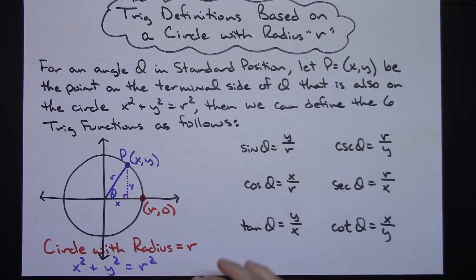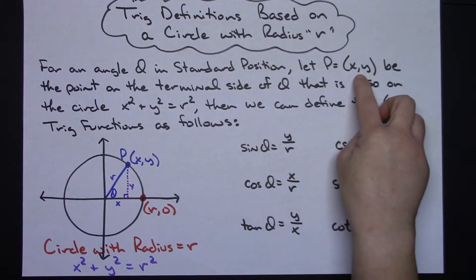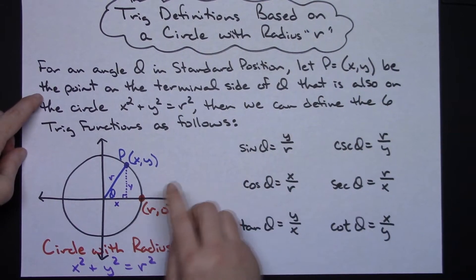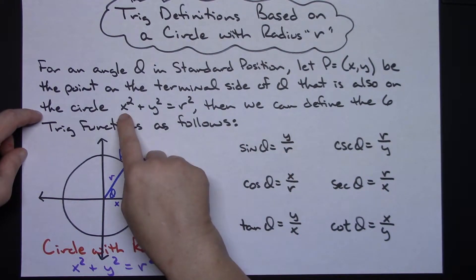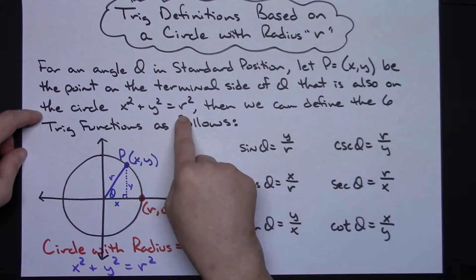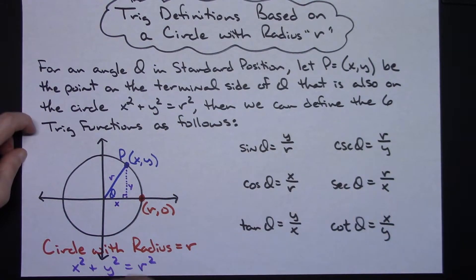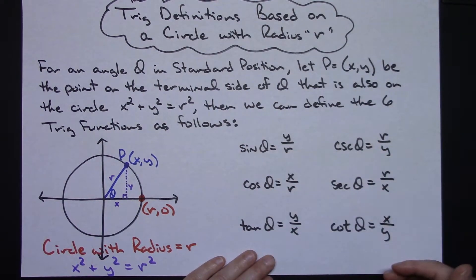We're going to give a definition here so that we can define each of these trig values. So let's say for a given angle theta in standard position, we're going to let point P, which is a random point (x,y), be a point on the terminal side of theta that is also on the circle where we've got x squared plus y squared equals r squared. Then we can find the six trig values functions based on these following definitions.